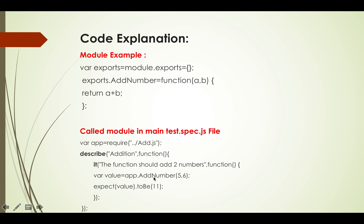Inside the it block, we call app.addNumber with two parameters a and b. We input the values 5 and 6. Then using expect, we set the expected value to be 11. If 5 plus 6 equals 11, the test passes with no error. If the values do not match — for example if we expected 12 but set toBe(11) — then it will show an error.